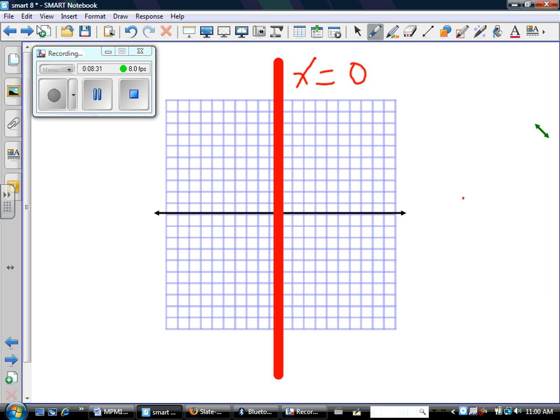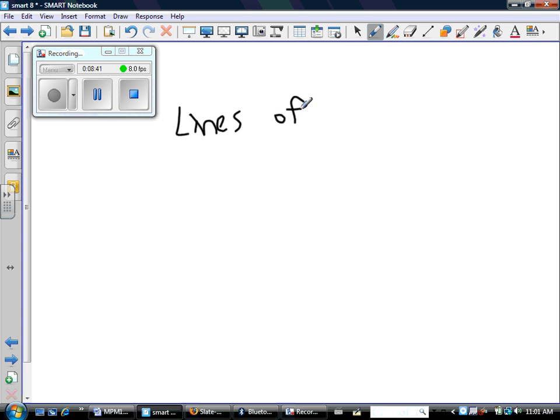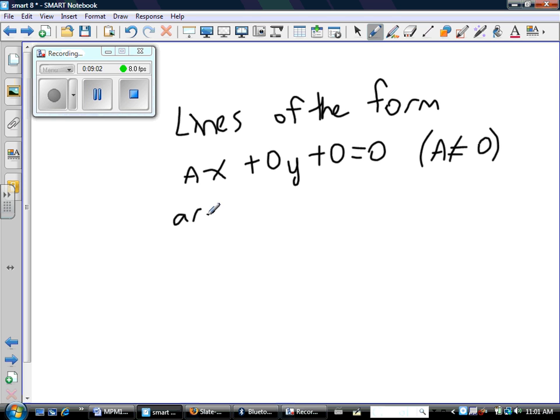So how would you answer this question? Well, I would say lines of the form Ax + 0y + 0 = 0 where A is not 0 are all vertical lines at x = 0.